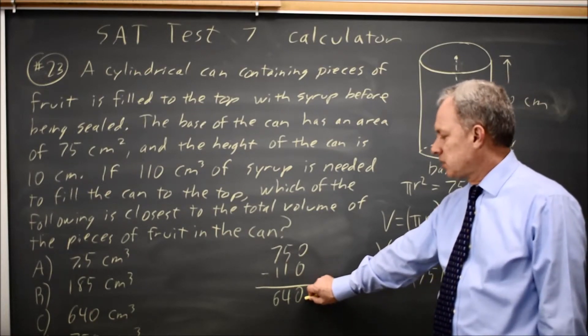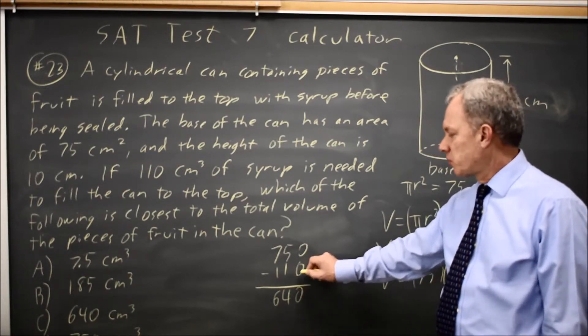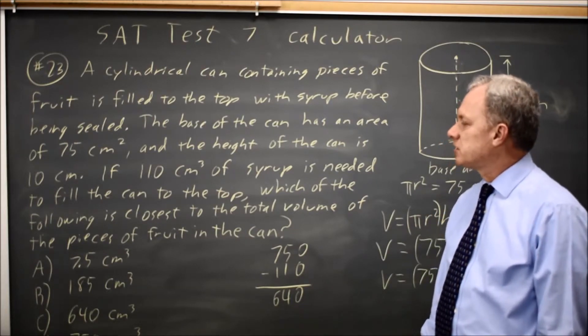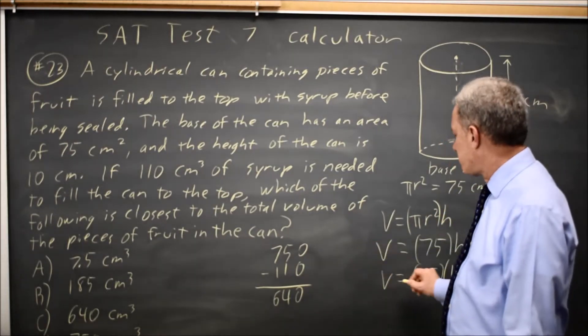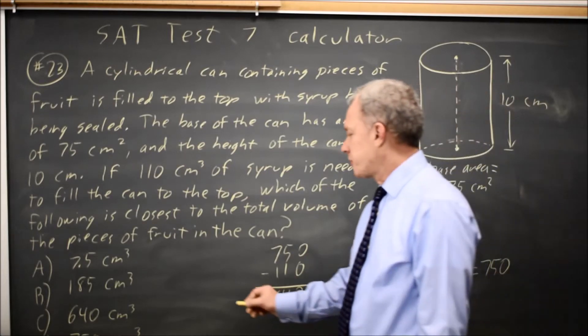So if we have 640 cubic centimeters in fruit and 110 cubic centimeters in syrup, that's a total of 750, which is the volume of the can, so the correct answer would be C.